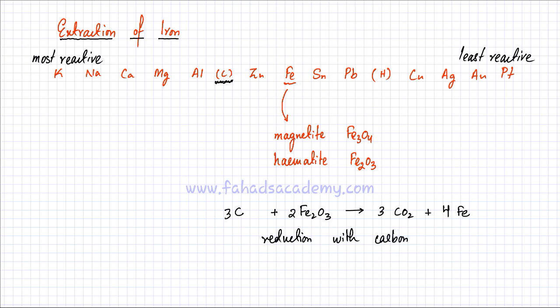There are a lot of problems associated with this method of extracting iron. The iron ore has a lot of impurities — it's not just pure magnetite or hematite. It doesn't contain only Fe2O3 or Fe3O4; it contains a lot of other impurities. It has a lot of sand in it — SiO2 — it has sulfur in it, it has phosphorus in it. So you need to purify the ore and get rid of the impurities. We're now going to discuss the entire process by which this method is carried out in industry.